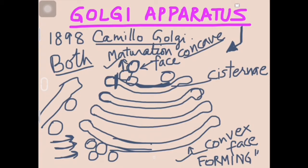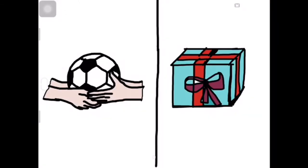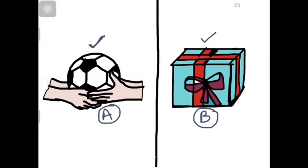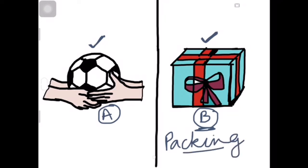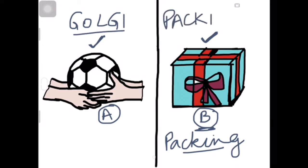The maturation face is where things get packaged. Imagine your friend's birthday — would you give a football directly, or wrap and pack it nicely? Obviously we get it packed! Same way, Golgi does the packaging. इसका मुख्य काम है पैकिंग — packaging of materials for dispatch.